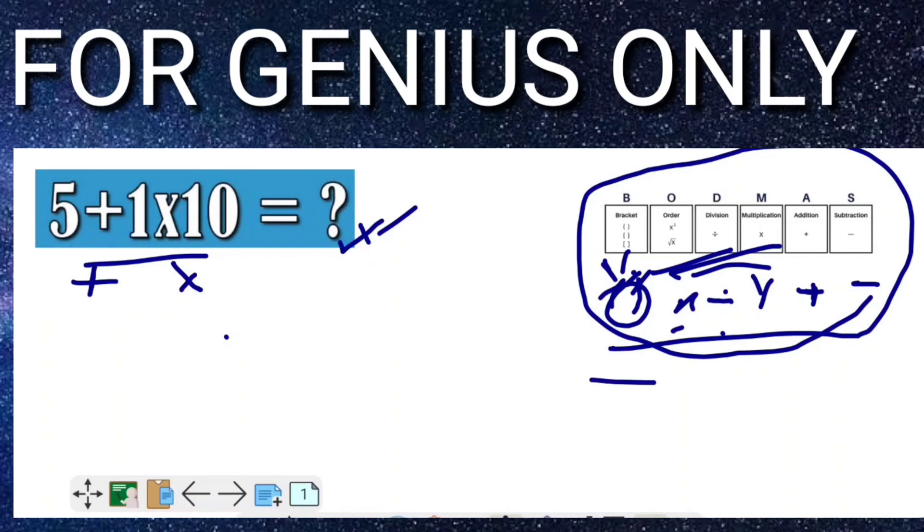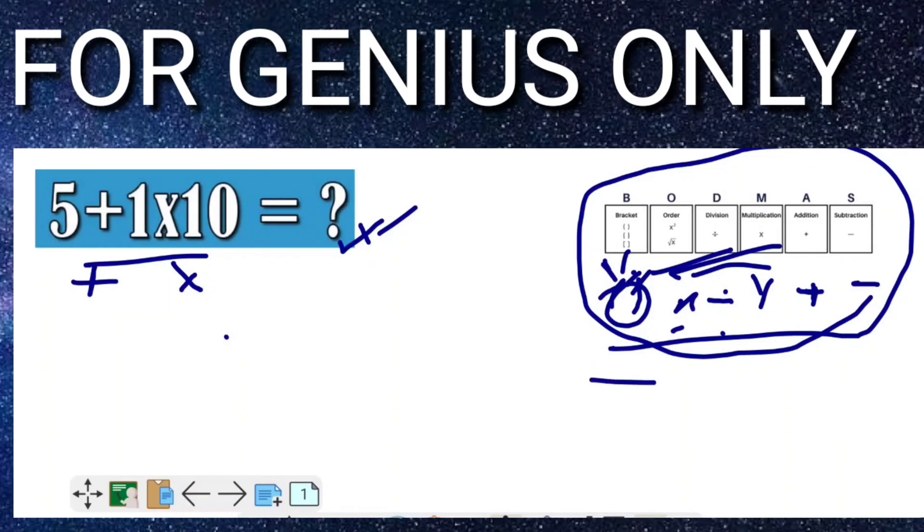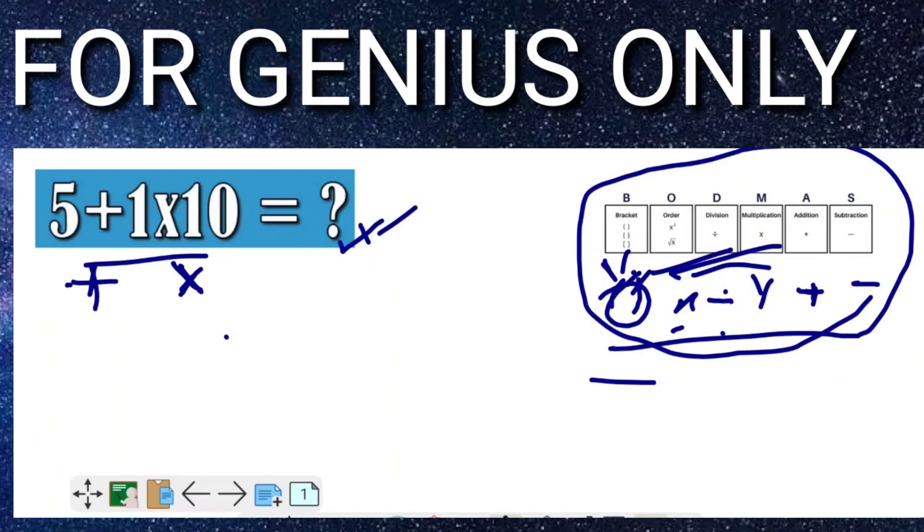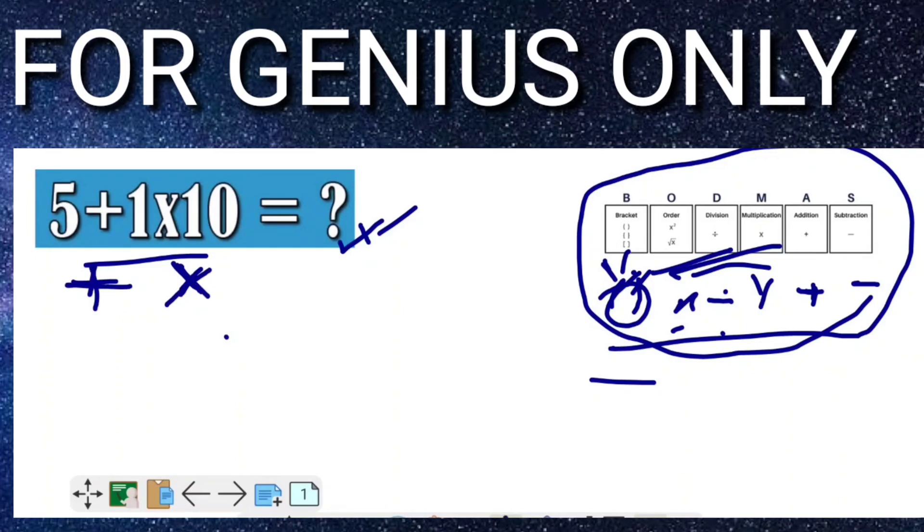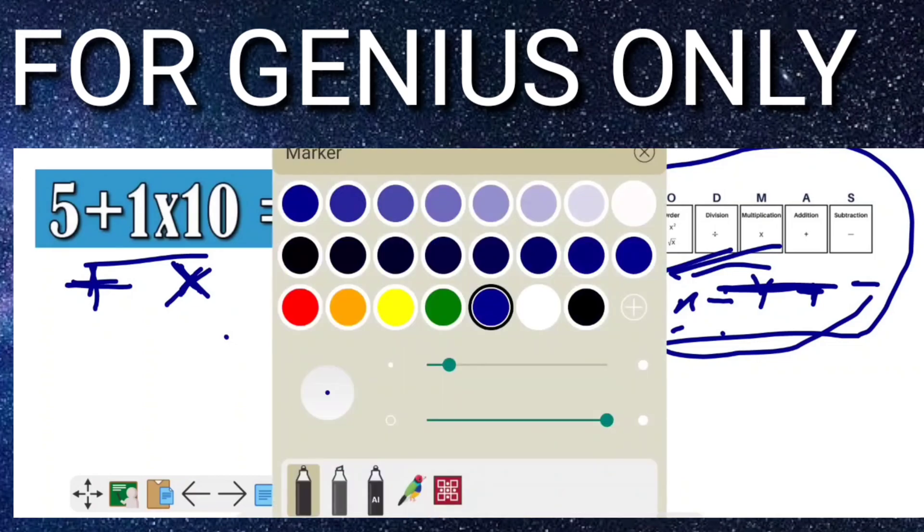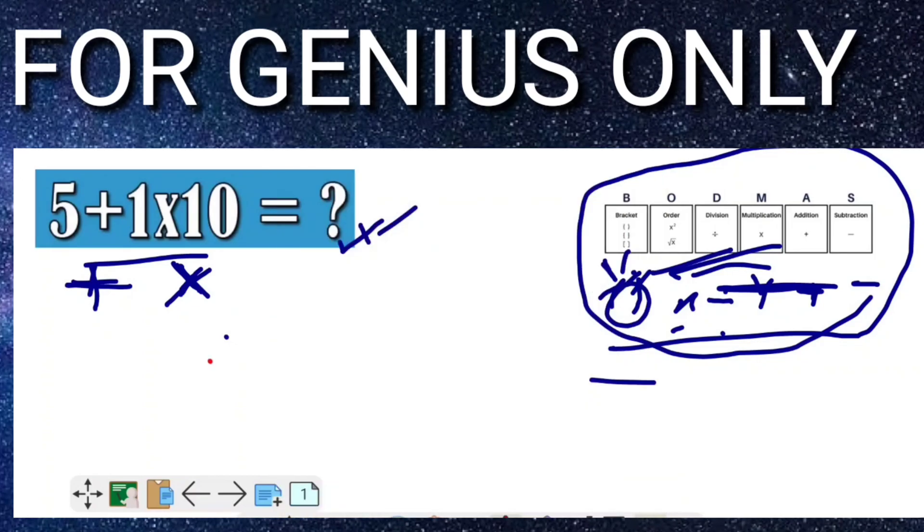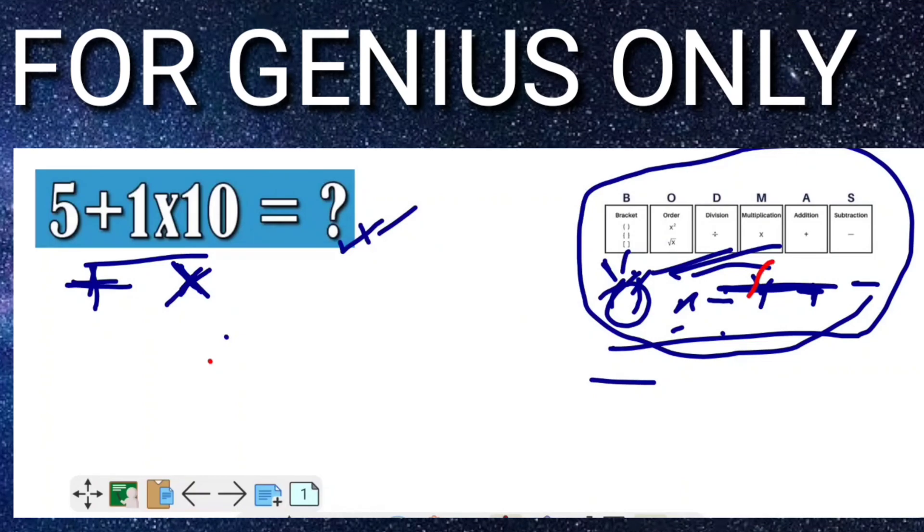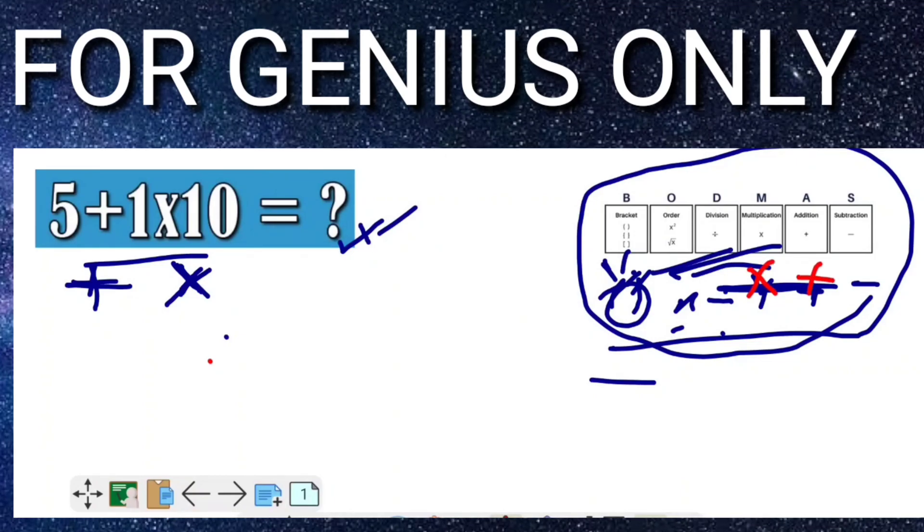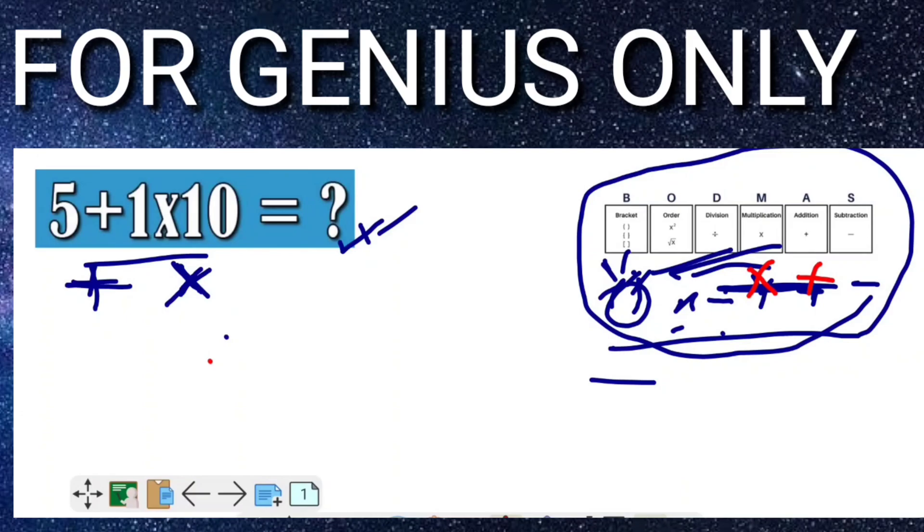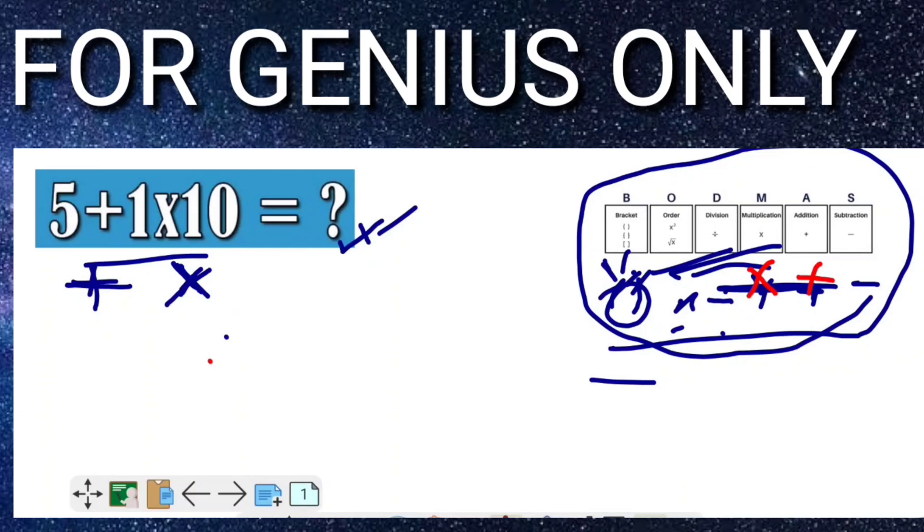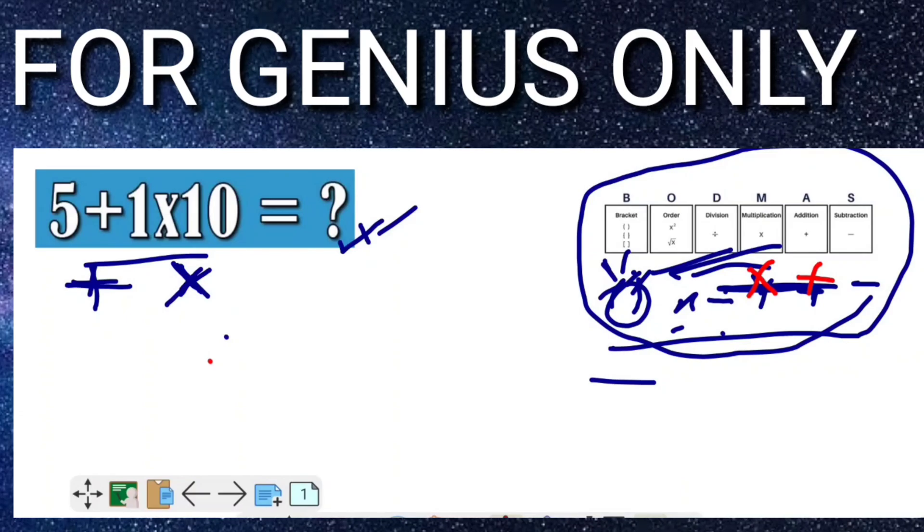So friends, now what will go in this situation? In this equation only two signs are available. One is addition and second is multiplication. In this BODMAS rule, which sign we calculate first? See friends, first we should multiply and after that we should do addition. This is the simple step to do.